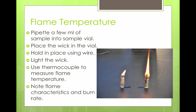The last piece of product analysis is a flame temperature test. Take a few milliliters of a sample, put it in a sample vial, place the wick in the vial and hold it at a certain height above the top using wire. Light the wick, wait for the flame to become established, then use a thermocouple to carefully measure the flame temperature. Note what the flame looks like, and measure the burn rate by placing the vial on a scale and tracking how much mass of fuel is burned over a specific time interval of 5 to 10 seconds.